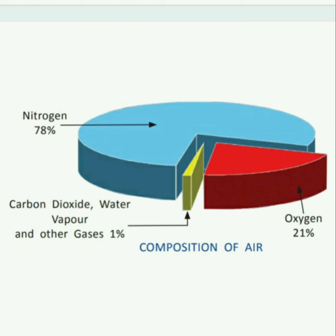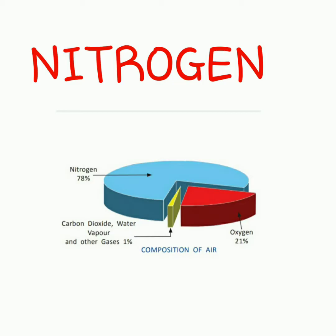Let's start with nitrogen. Nitrogen is not used by living beings directly — we can't use it directly from the air. Plants get nitrogen from the soil, and animals get nitrogen from plants.